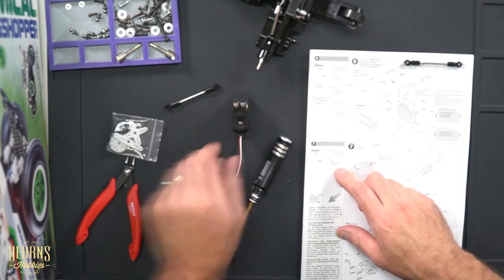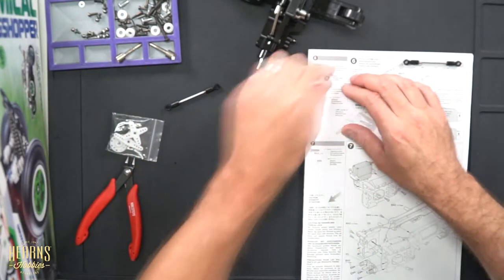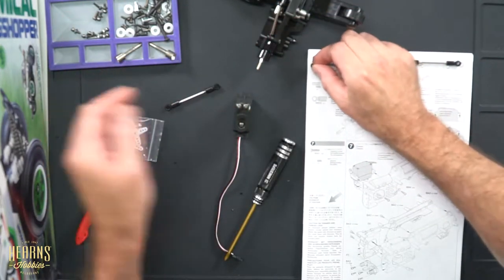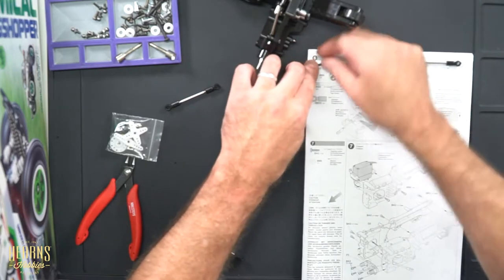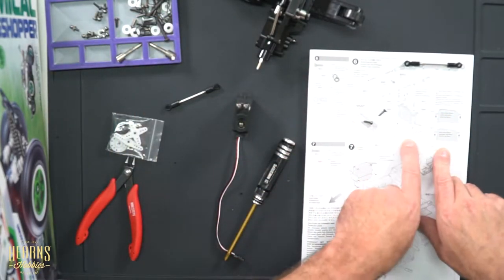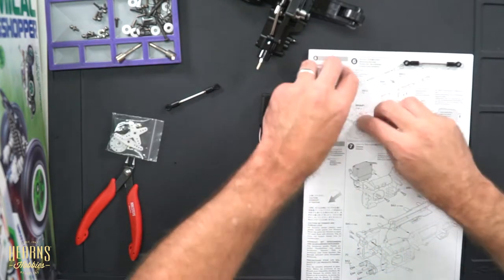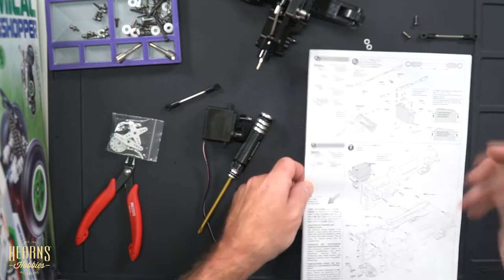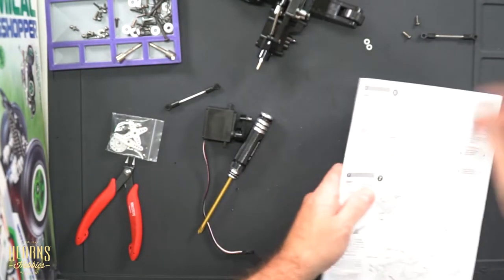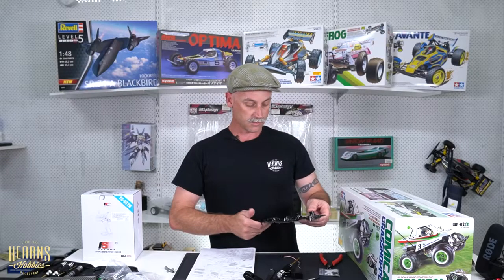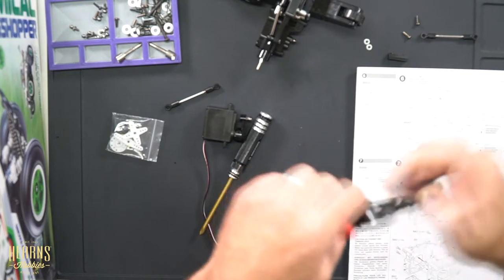Now we've got to find our servo mounts. We've got two washers, two three by 10 mil screws here. Now our servo mounting ears. Okay guys, bear with me while I find the parts. Here's the L parts tree, go ahead and cut the servo ears off.